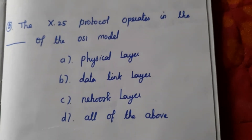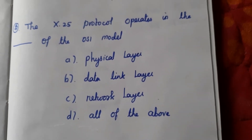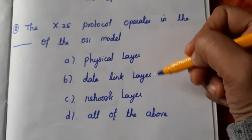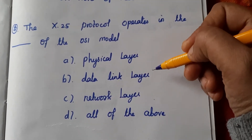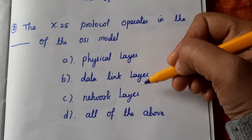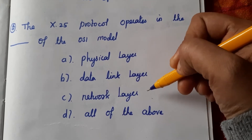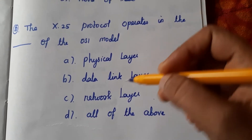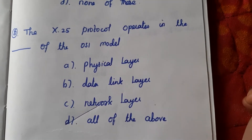Next question: The X.25 protocol operates in the three last layers of the OSI model — that is, the physical layer, data link layer, and network layer. So the answer here is B.